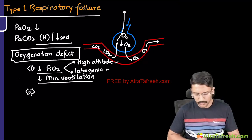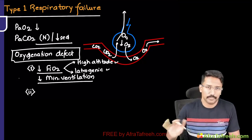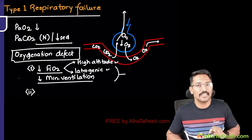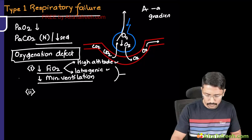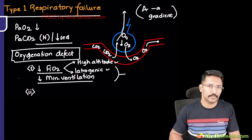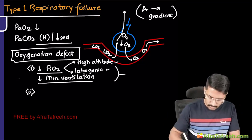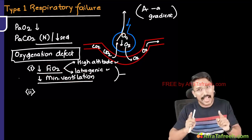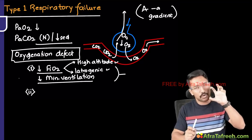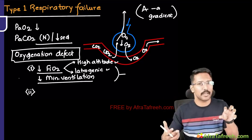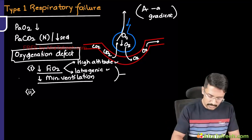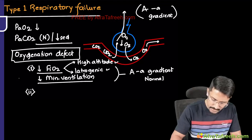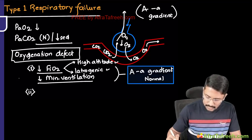Regarding AA gradient: many textbooks state it is always increased in type 1 respiratory failure, but that is false. When FiO2 is reduced or minute ventilation is reduced, there is a proportionate decrease in alveolar oxygen and oxygenation of the blood, so the alveolar-arterial gradient remains normal. So in these circumstances the AA gradient can be normal. Please remember it is not always increased.